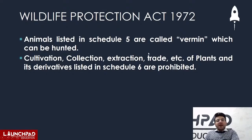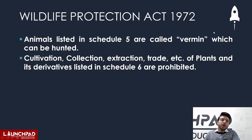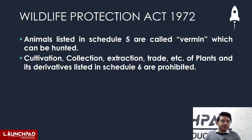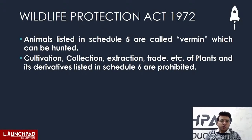Animals listed in Schedule 5 are called vermin, which can be hunted. If an animal damages crops, human habitation, or spreads disease, it can be declared vermin and then it can be killed — but not arbitrarily. There is also a Prevention of Cruelty to Animals Act in India. Cultivation, collection, extraction, trade, etc. of plants and their derivatives listed in Schedule 6 are prohibited.